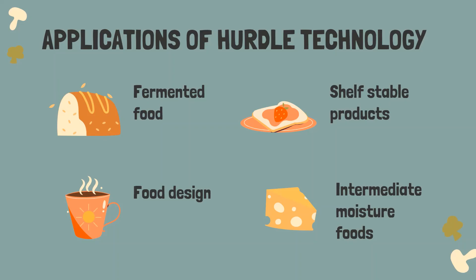There are many applications of Hurdle Technology. The major applications include fermented food, which is fermented by the processing of beneficial microorganisms on food; shelf-stable products which are stable at high temperatures; innovative food designs for new food products; and intermediate moisture foods which have very low moisture activity.